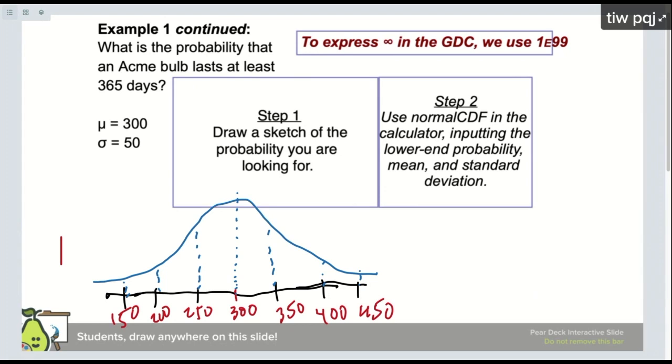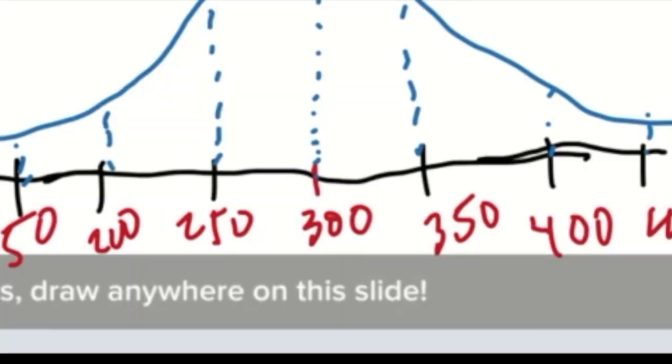And so this question is asking, I want to know the probability of a bulb lasting at least 365 days. So days, that's on the bottom here. So I'm going to look at 365, somewhere around here. It doesn't have to be completely accurate, just in the right area. So I'm looking for 365 or better. So this is the probability I want here.